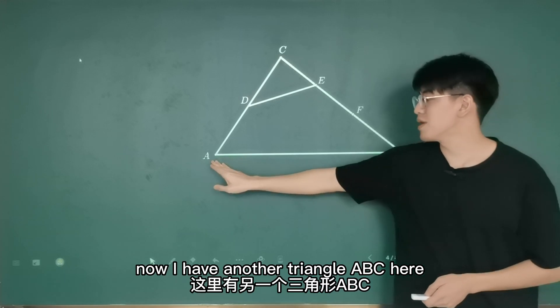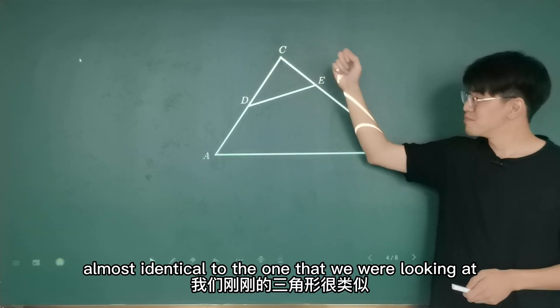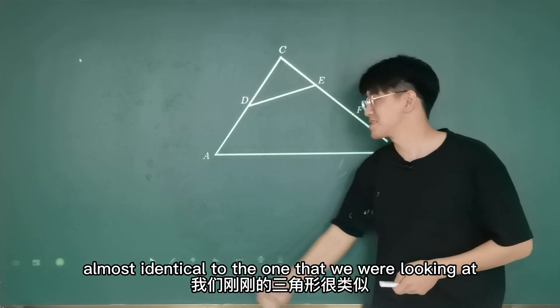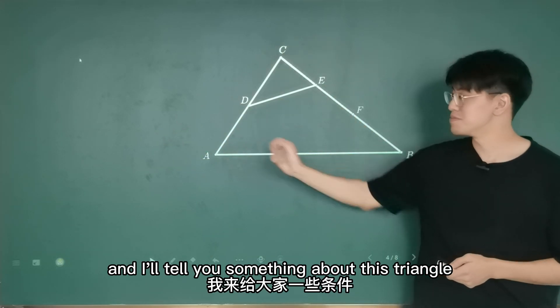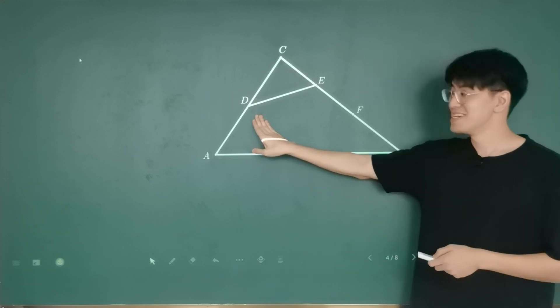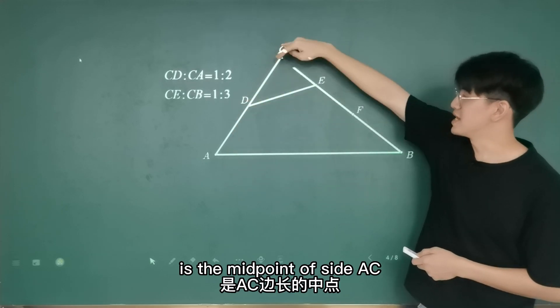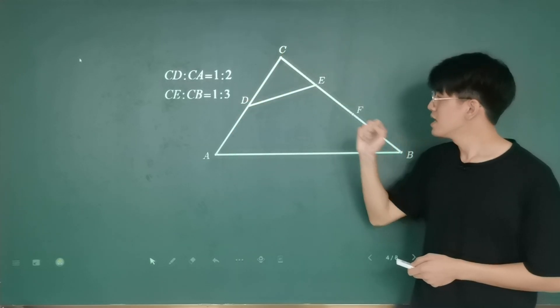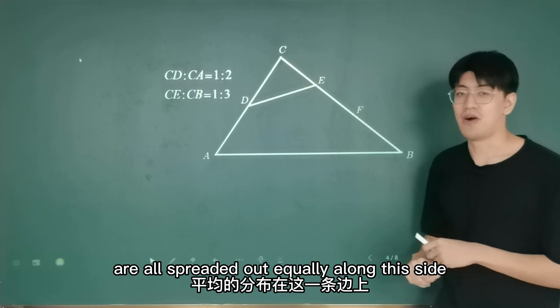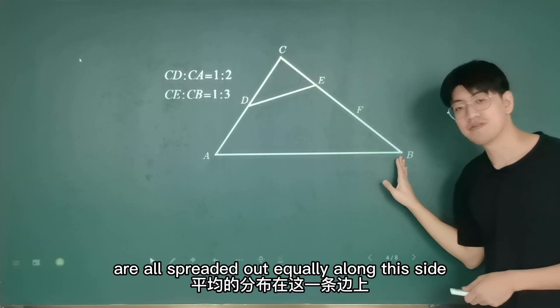Now I have another triangle ABC here, which looks almost identical to the one that we will look at. And I'll tell you something about this triangle. The point D is the midpoint of side AC, and the points C, E, F, B are all spread out equally along this side.